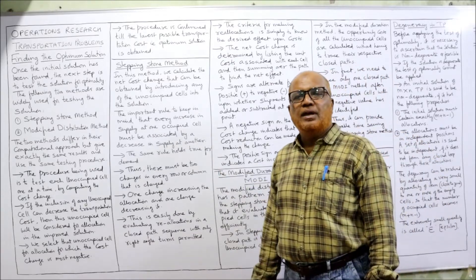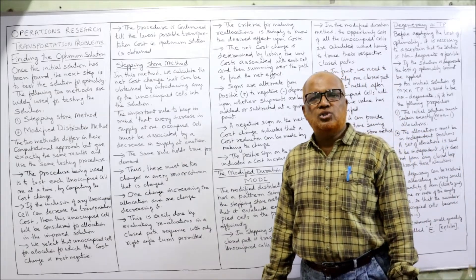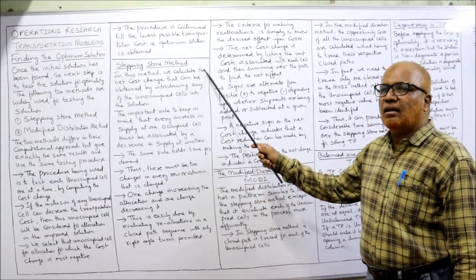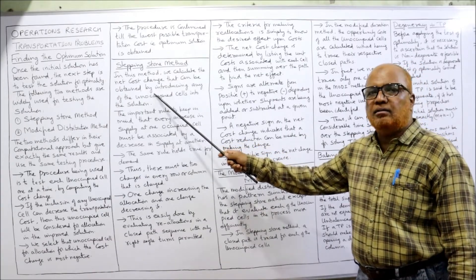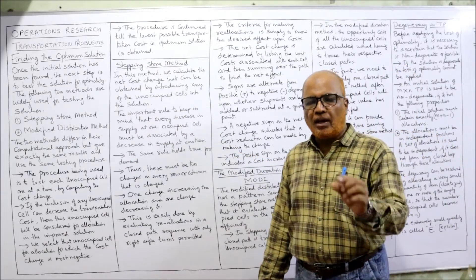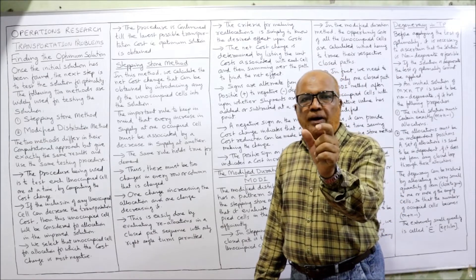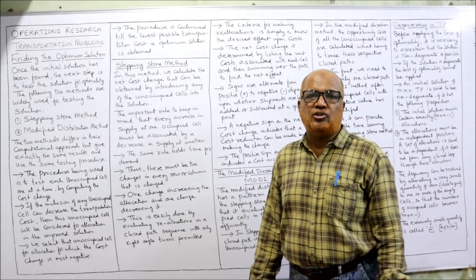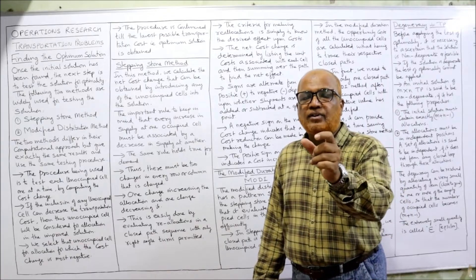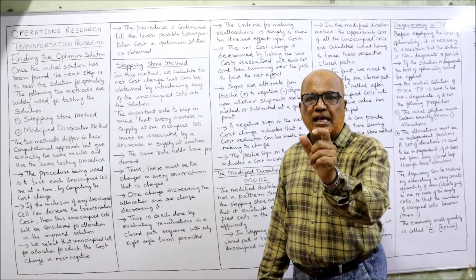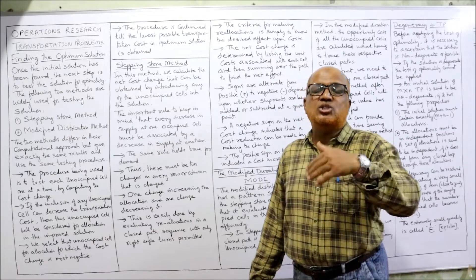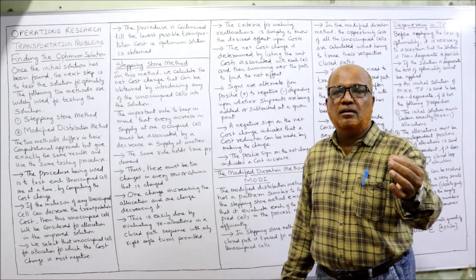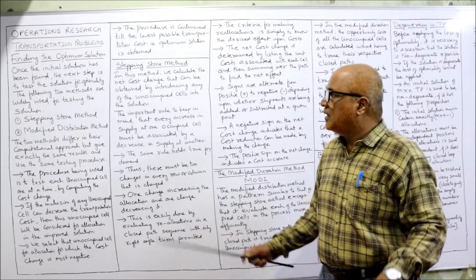The Stepping Stone method — in examination, theory questions are also asked about this. In the stepping stone method, we calculate the net cost change that can be obtained by introducing any unoccupied cell into the solution. For each unoccupied cell, we try to occupy it by one unit and find out the cost change — whether cost is increasing or decreasing. We do this for every unoccupied cell one by one.